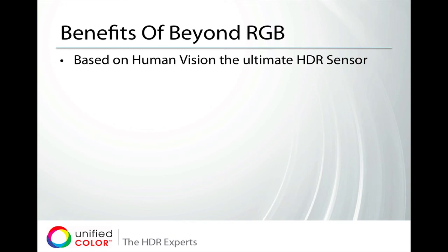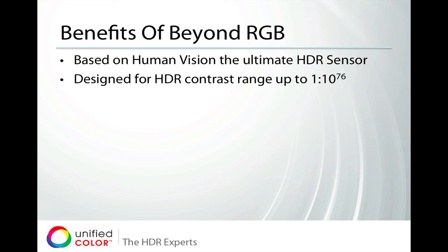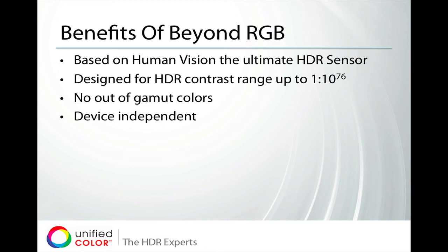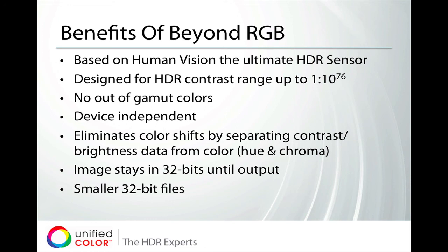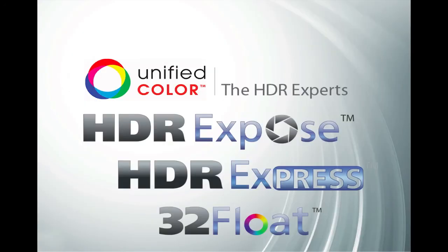The benefits of Beyond RGB are many: it's based on the human vision system — the ultimate HDR sensor — it's designed for very high dynamic range contrast, there are no out-of-gamut colors, it's fully device independent, it eliminates color shifts by separating contrast and brightness data, image files always stay in 32-bit color until converted for final output, and it produces smaller 32-bit files than Radiance HDR, OpenEXR, or 32-bit TIFF. I hope this presentation has helped explain the HDR process and highlight the key features and benefits of our HDR software. Beyond RGB TrueColor 32-bit processing is a feature of all Unified Color products — HDR Expose, HDR Express, and 32Float. Please visit our website for more information and check out our other tutorials. Thank you for watching.